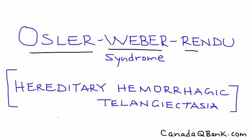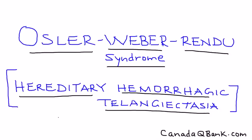Osler-Weber-Rendu syndrome, also known as hereditary hemorrhagic telangiectasia, is an autosomal dominant genetic disorder and is a predominantly vascular problem.